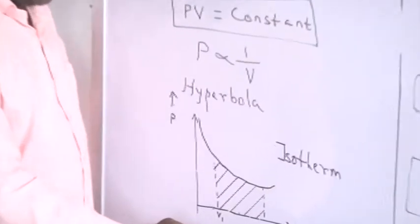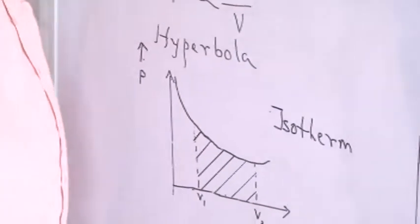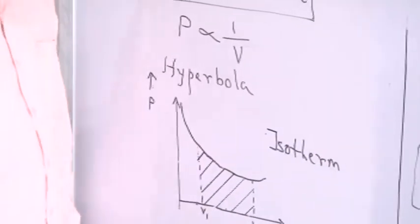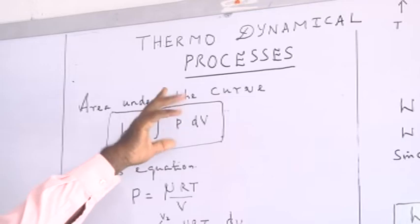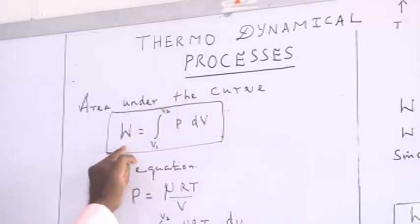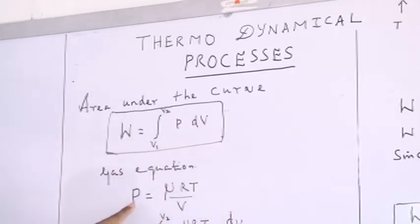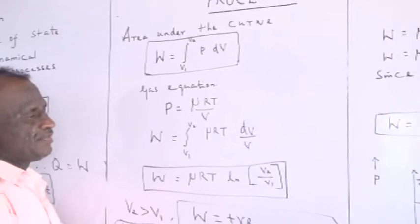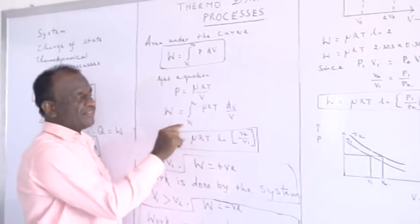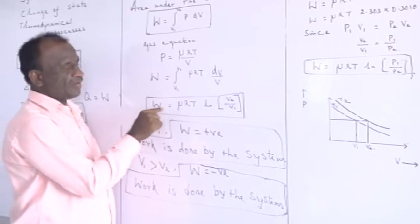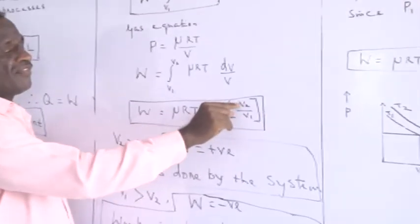Let us assume there is a change between two volumes, V1 and V2. To find the amount of work done, we calculate the area covered by this curve. The area under the curve gives the amount of work done. Mathematically, it is represented as W equal to integral from V1 to V2 of P dV. From the gas equation, P equal to μRT/V. Substituting, we integrate dV/V, which gives ln V. Within the limits V1 to V2, we get ln(V2/V1). The remaining terms are constant. Therefore, the work done is W equal to μRT ln(V2/V1).